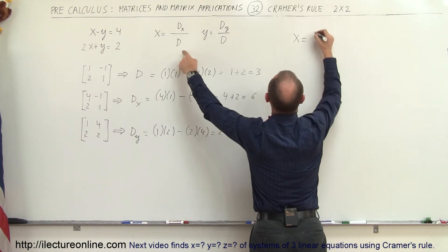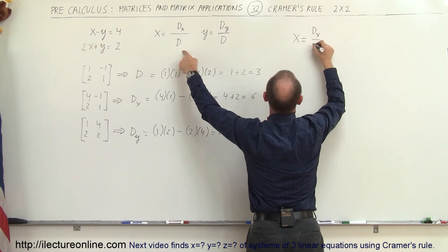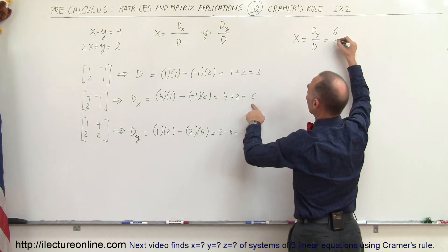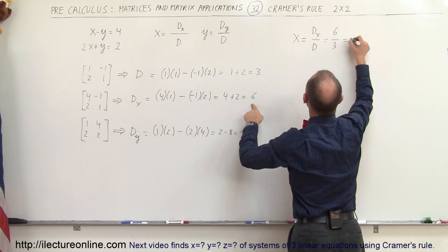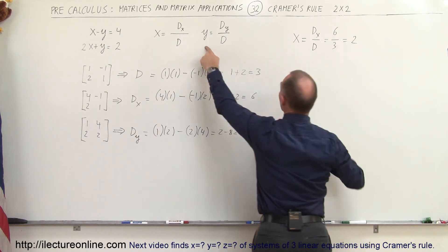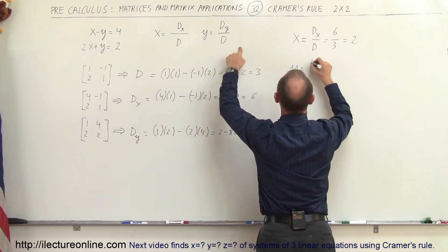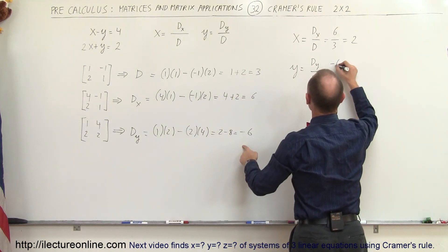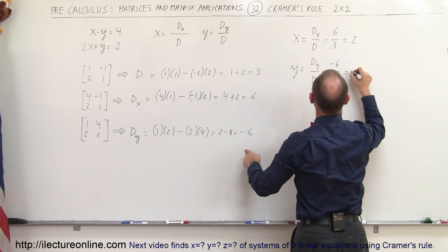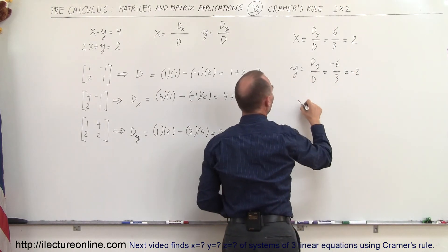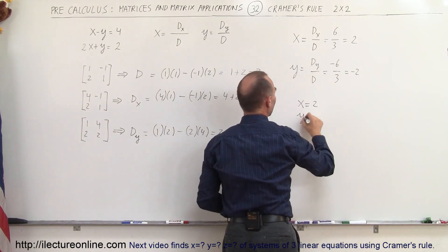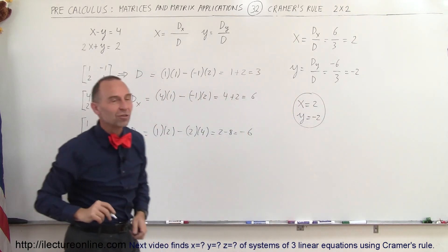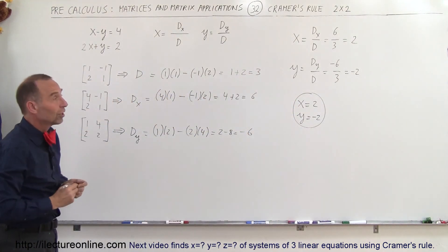Now we can find our solutions. The x value equals D sub x divided by D, which is 6 divided by 3, equal to 2. The y value equals D sub y divided by D, which is -6 divided by 3, equal to -2. So x equals 2 and y equals -2 is the solution to that system of linear equations using Cramer's Rule.